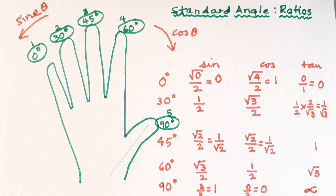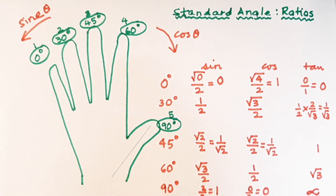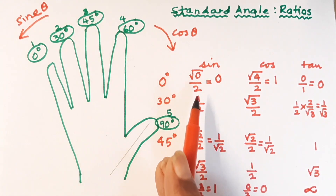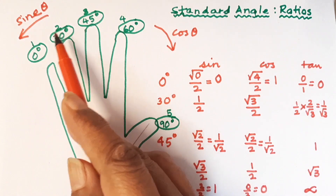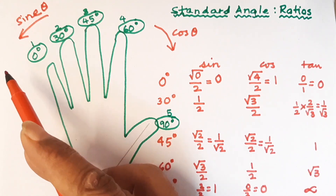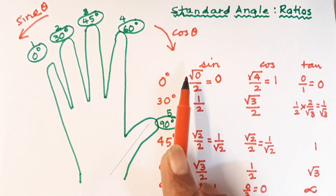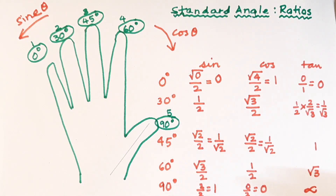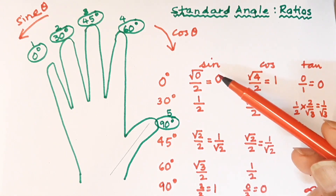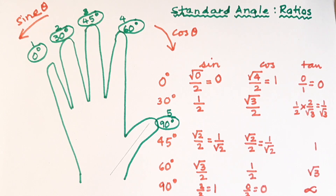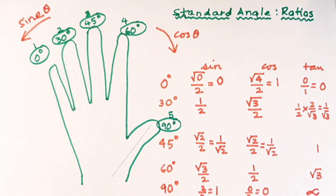So those are our basic ratios of standard angles. To recap: for sine, look at the fingers on the left and take the square root of that count divided by two. For cosine, look at the fingers on the right, take the square root divided by two. And tan is always sine upon cos. Hope you have enjoyed the video — thank you for watching.